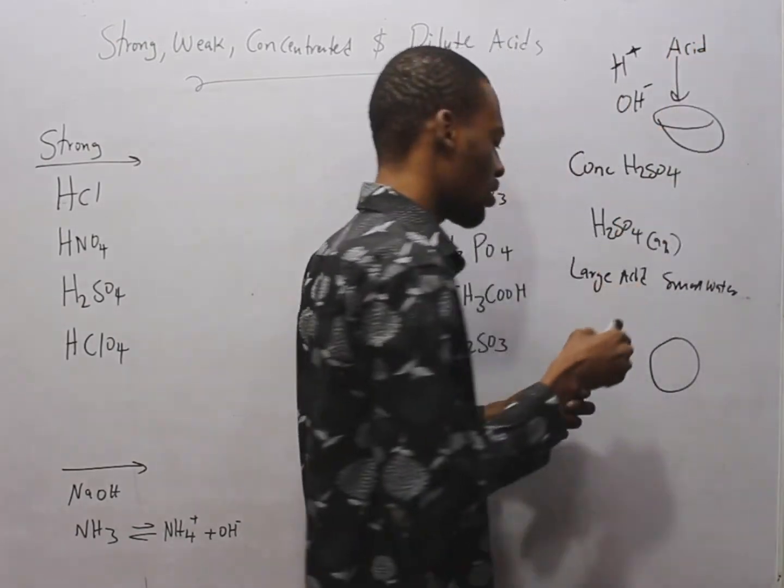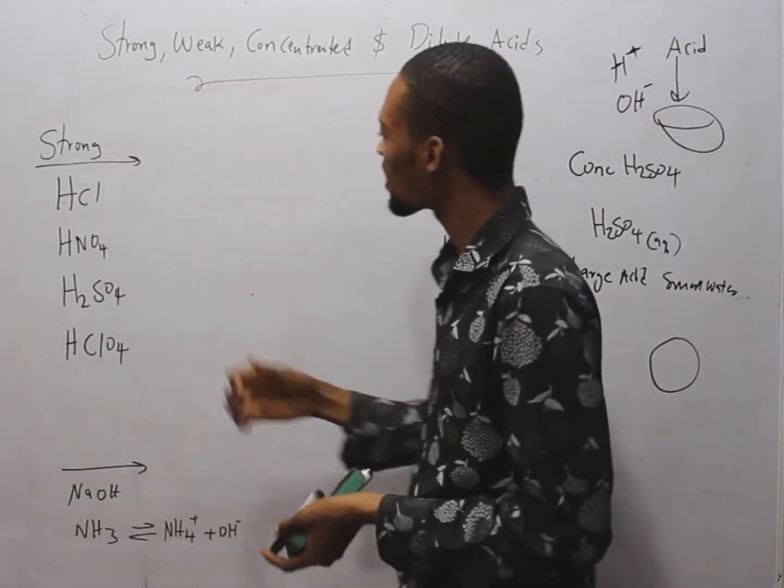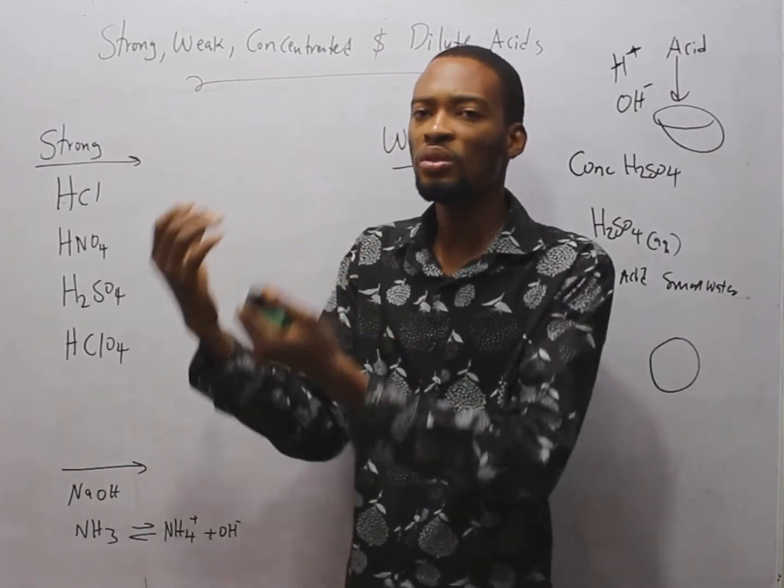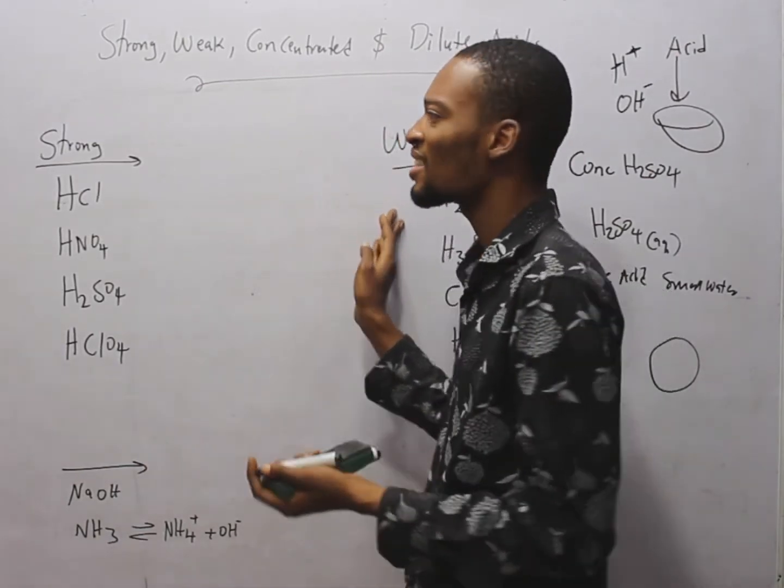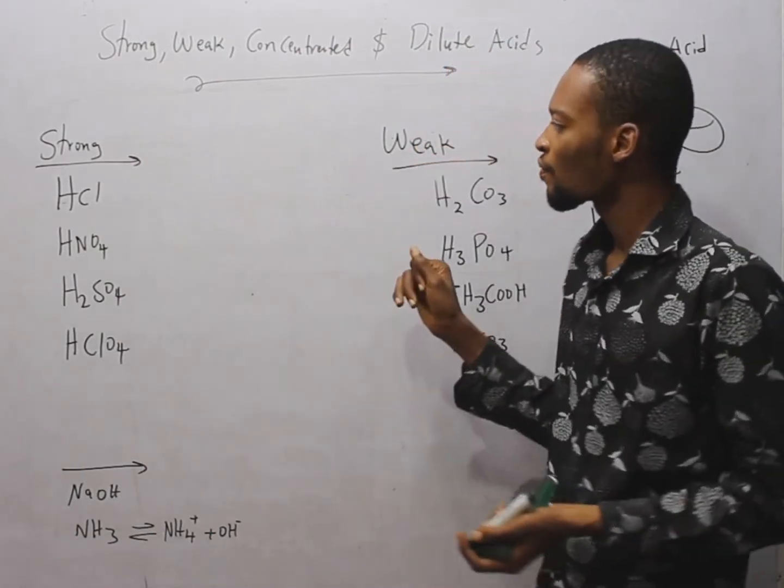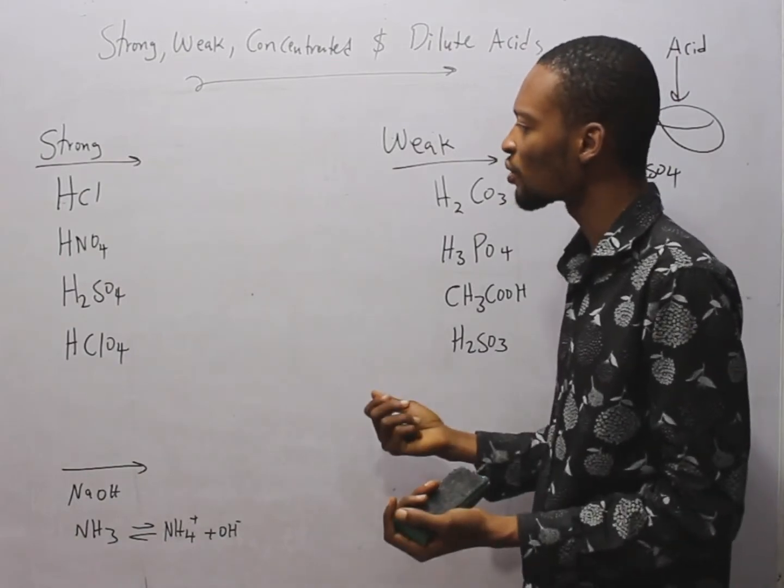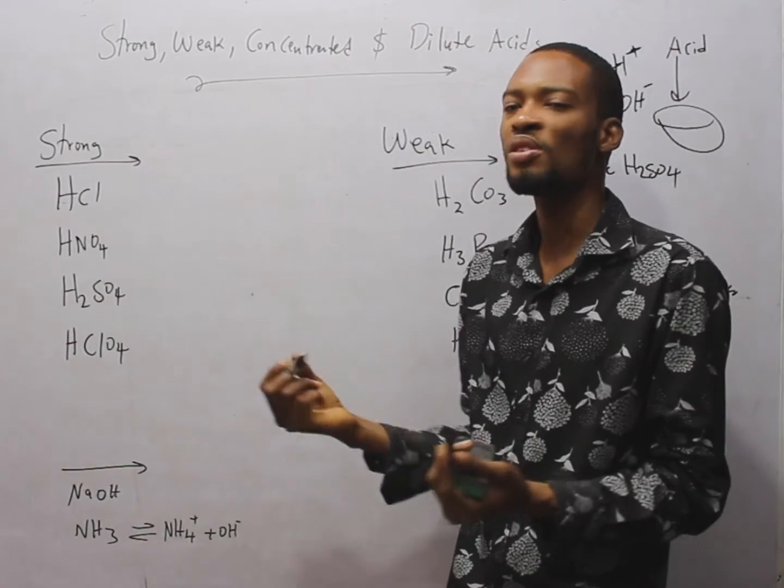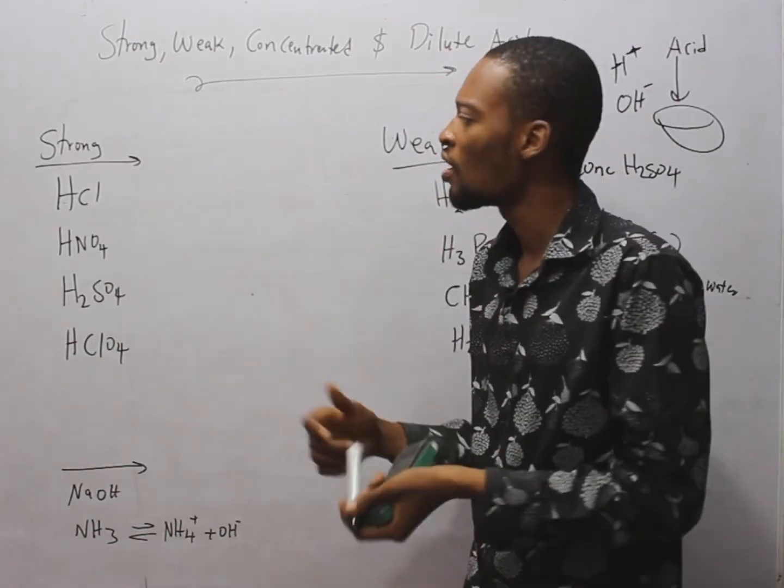Now, in the definition I gave, I said acid is a substance that produces hydrogen ion or proton donor, while base produces hydroxide ion in solution or they accept proton. Strong acid is an acid which ionizes completely in solution. It ionizes completely in solution or in solution it gives us the hydrogen ion.